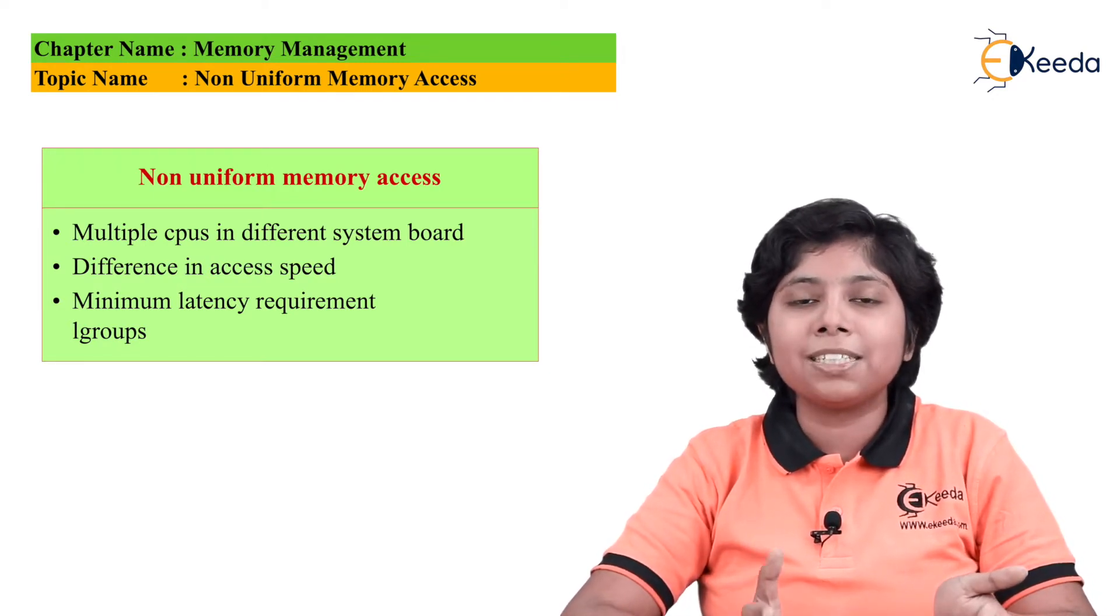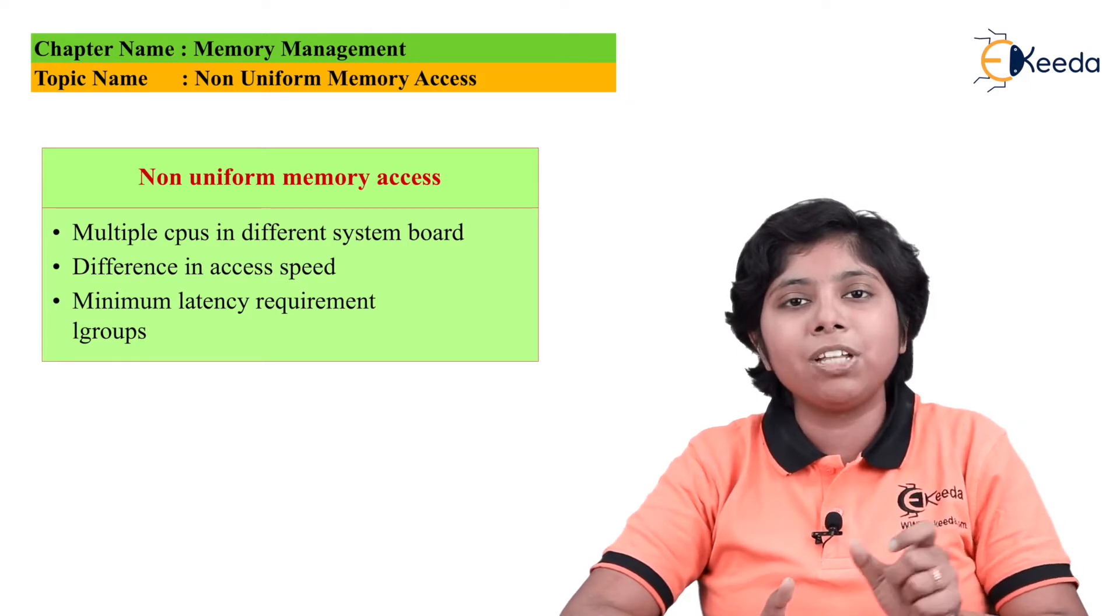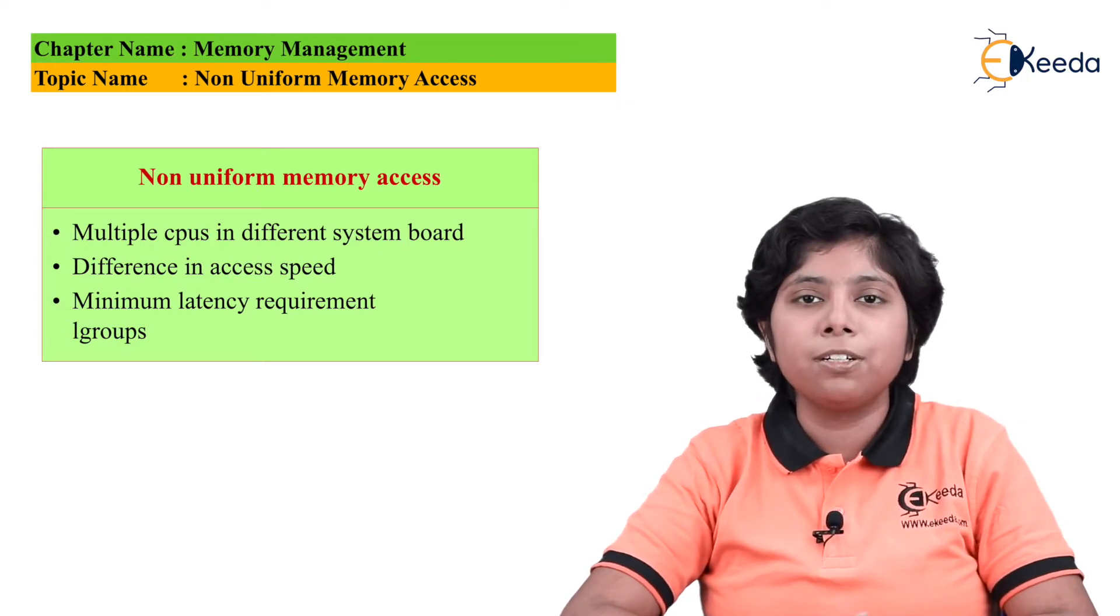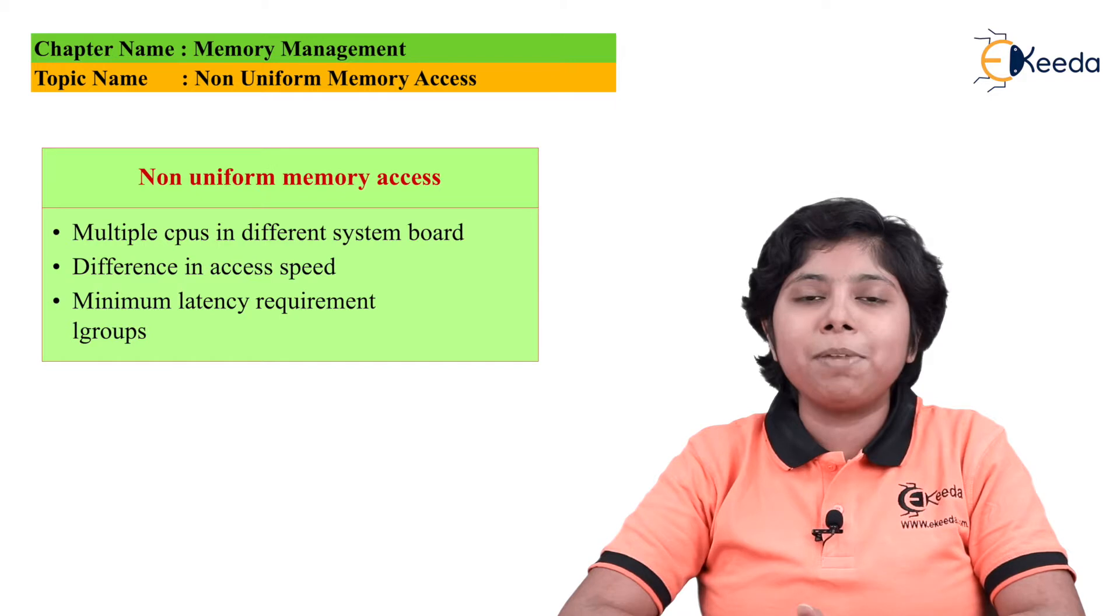So we need to choose the CPU to schedule the process's pages as close as possible. That means the process in which the pages are allocated should be kept on the same CPU and the same system board with the CPU that is giving the minimum latency period for that particular execution.